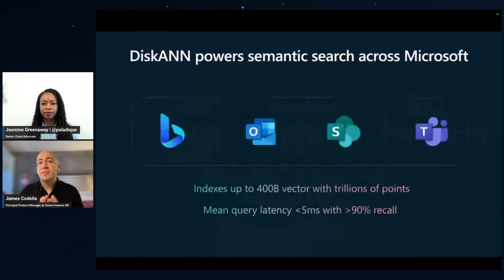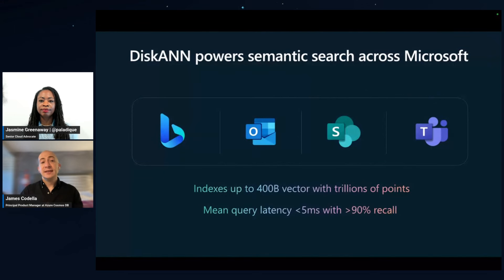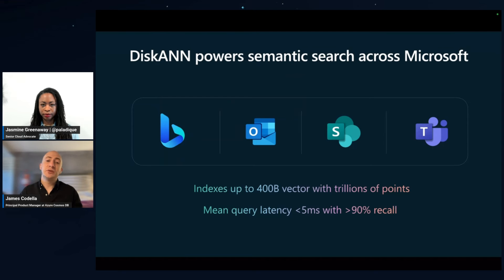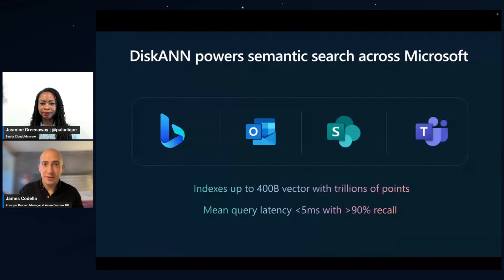Let's talk a little more about the DiskANN-based index. DiskANN is a suite of highly scalable algorithms developed at Microsoft Research for vector indexing and search. DiskANN is already used widely inside Microsoft, powering semantic search across the most widely used applications from Microsoft 365 and Bing. We have scenarios with indexes for up to 400 billion vectors of trillions of points, able to do this at high accuracy and very low latency. We're excited to announce we're bringing this to you, announced in preview at Build 2024.